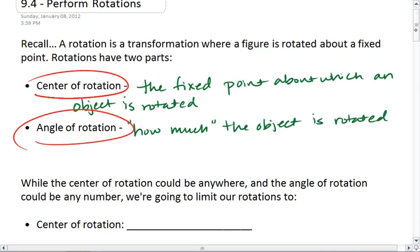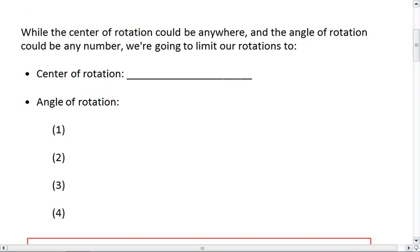While the center of the rotation could be anywhere on our Cartesian plane, and the angle of rotation could be any number, we're going to limit our rotations to a center of rotation on the origin. And we're only going to look at angles of rotation that are 90 degrees, 180 degrees, 270 degrees, and 360 degrees.